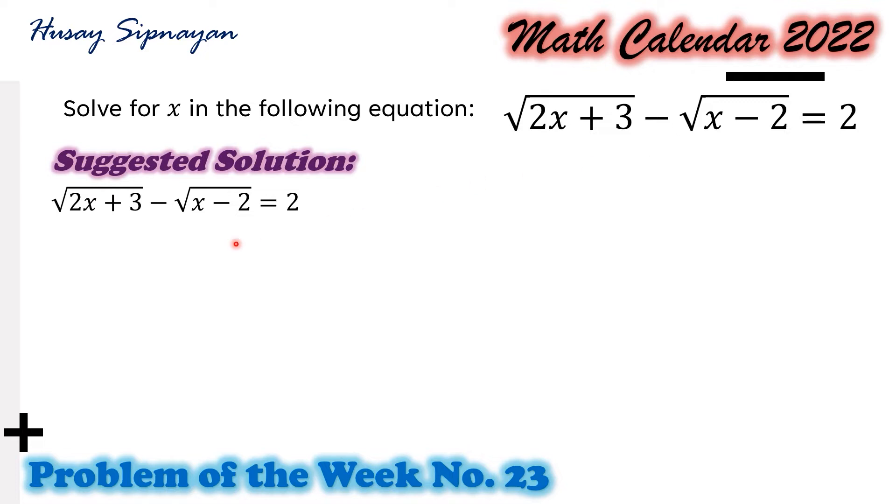For our given equation, square root of 2x plus 3 minus the square root of x minus 2 equals 2, we're going to isolate one radical expression. We add square root of x minus 2 to both sides of the equation. Then we get the square root of 2x plus 3 equals the square root of x minus 2 plus 2.